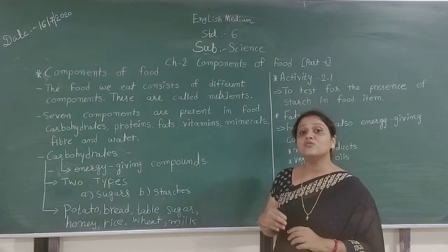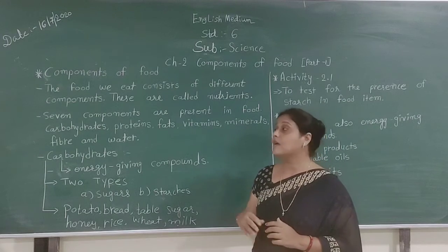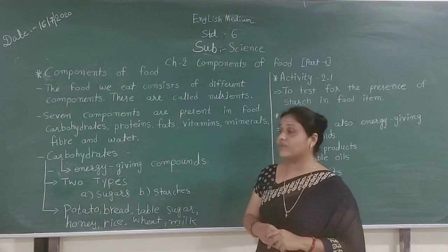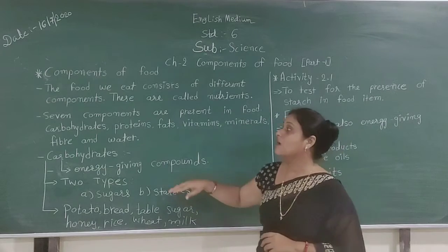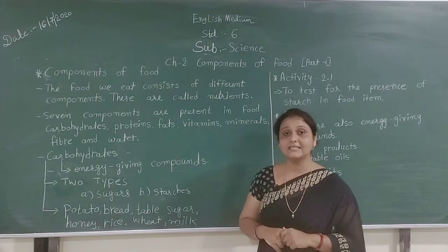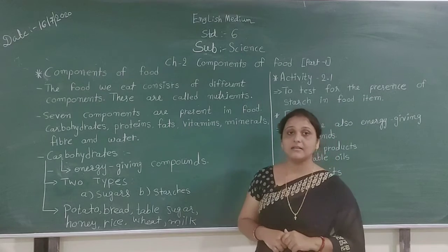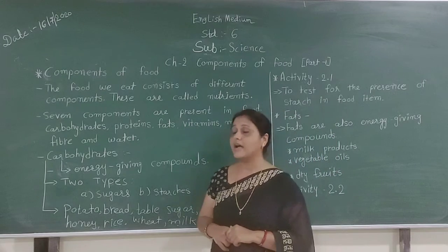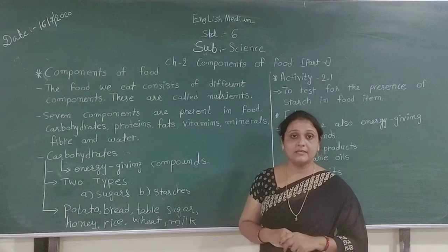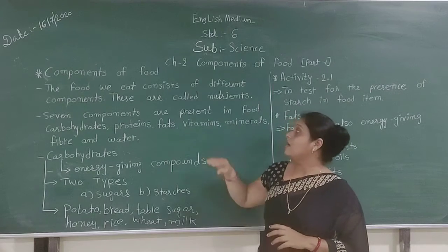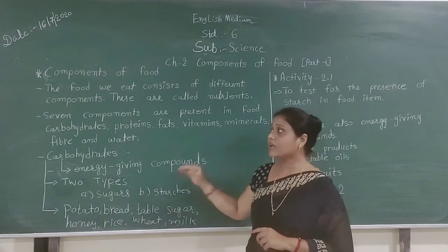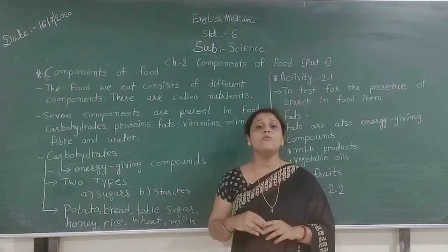All types of food we eat contain seven types of components. These seven components are: carbohydrates, proteins, fats, vitamins, minerals, fiber, and water. All these seven components are present in the food which we eat.